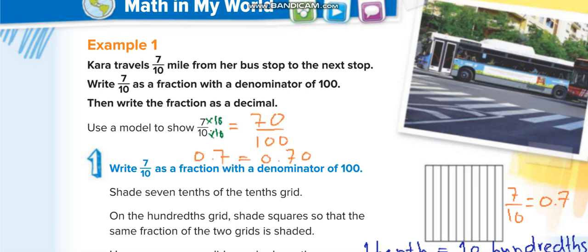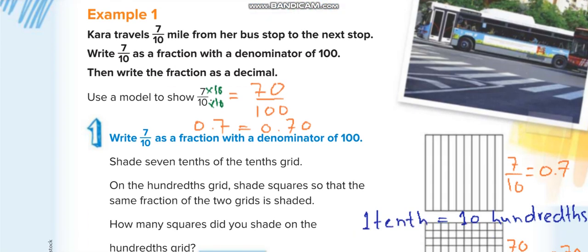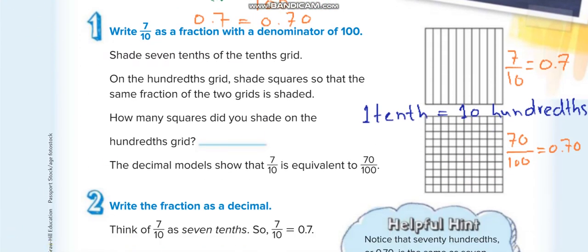And how we shaded it: here it is 7 out of 10, and this is 70 out of 100. This is 7 tenths and 70 hundredths. As you know, 1 tenth is equal to 10 hundredths, so 7 tenths equals 70 hundredths. So we'll shade 70 small squares here.